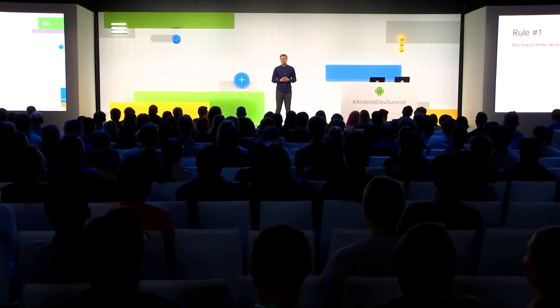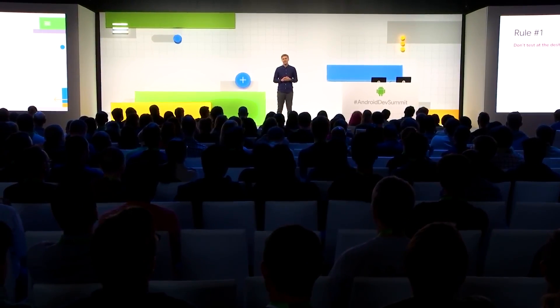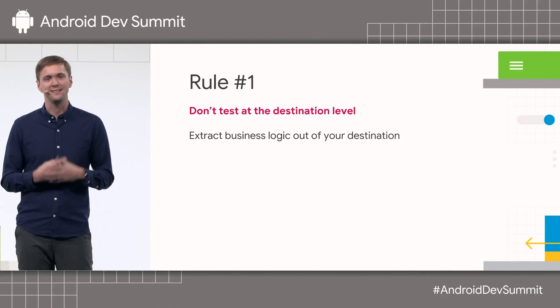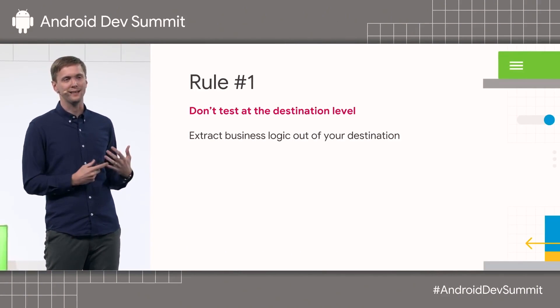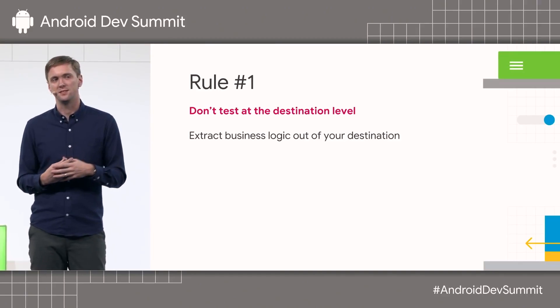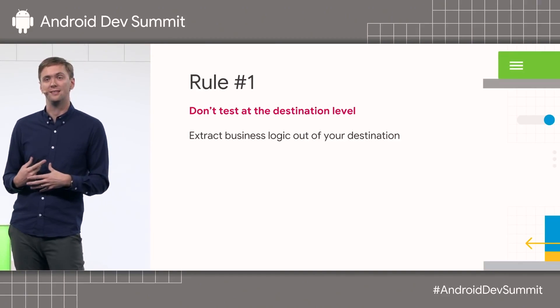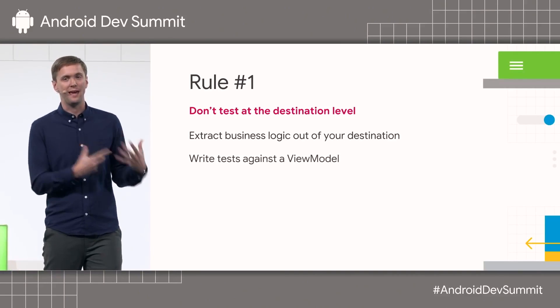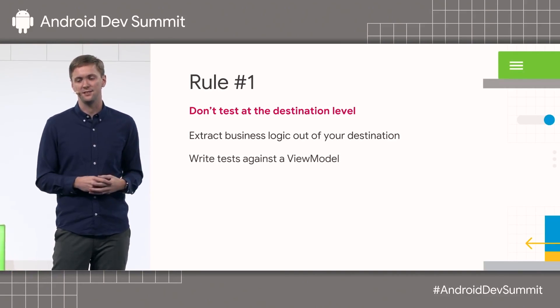Rule number one of testing things at the destination level is: don't test at the destination level. It's really the number one thing with testing — making things nice and separate, extracting business logic out of a destination and into something you can test in isolation.